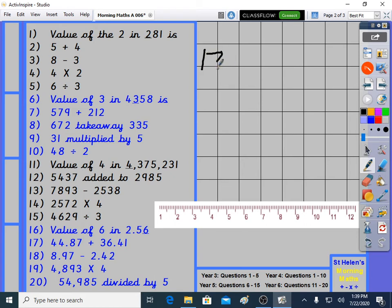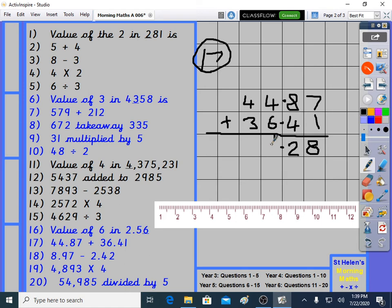Let's go on to question 17. Adding decimals. This is not too hard to line up, as long as you line up the decimal point. 44.87 and 36.41. Let's add those. 7 plus 1 is 8. 8 plus 4 is 12. 4 plus 6 is 10. Plus 1 is 11. 4 plus 3 plus little 1 is 8. 81.28. Quick check.